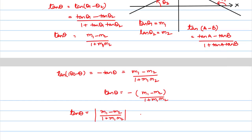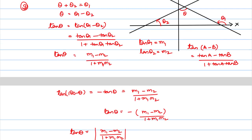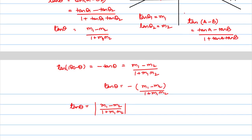We generally quote the acute angle. The angle between them is theta and we generally give the answer in terms of the acute angle. For that, we use a mod. The mod creates a positive value, so we will give the value of theta which is acute. The other value would obviously be 180 minus theta, which would be obtuse. So we can give both answers — both are correct — but generally we give the value which is acute.